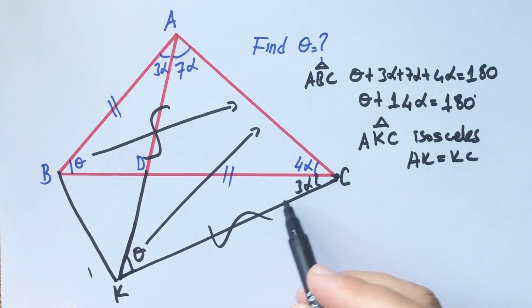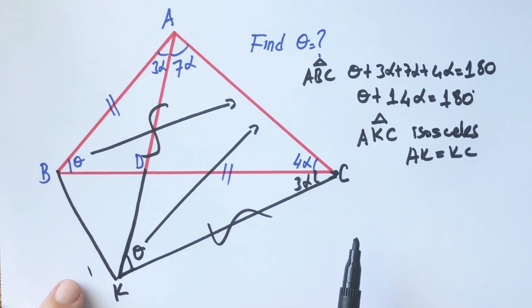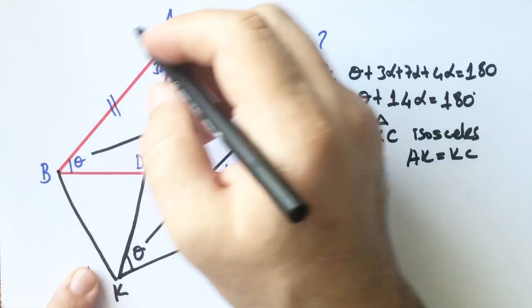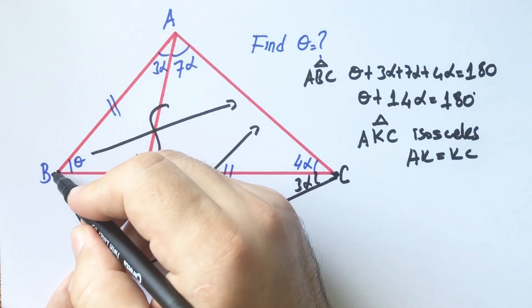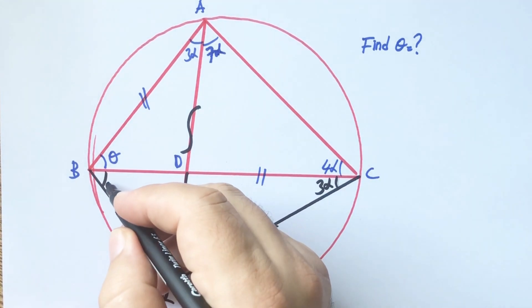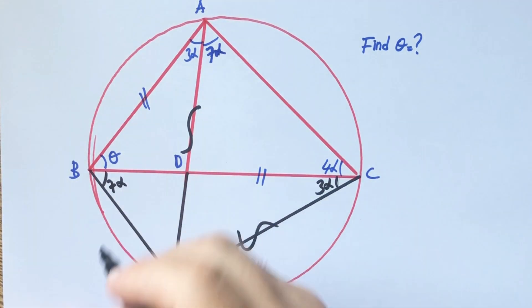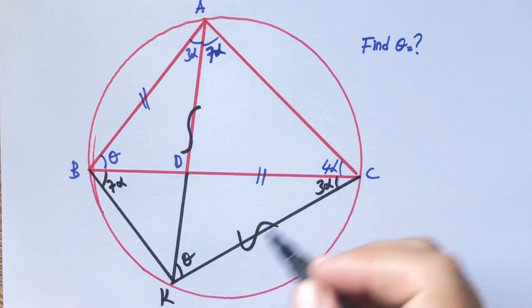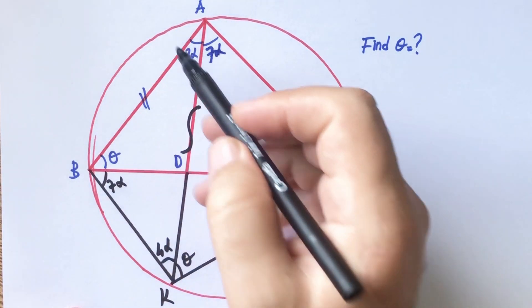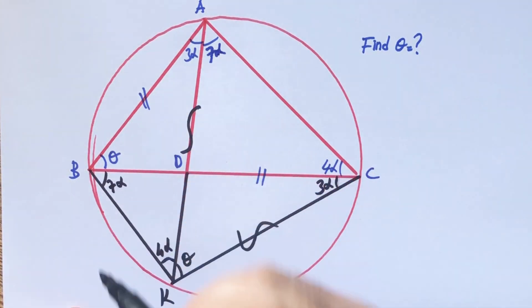Opposite of the three alphas have same length as well. So, if we draw circumcircle of this cyclic quadrilateral, if here is seven alpha, this angle must be seven alpha. And if here is four alpha, this angle must be four alpha. Because they have same arc.